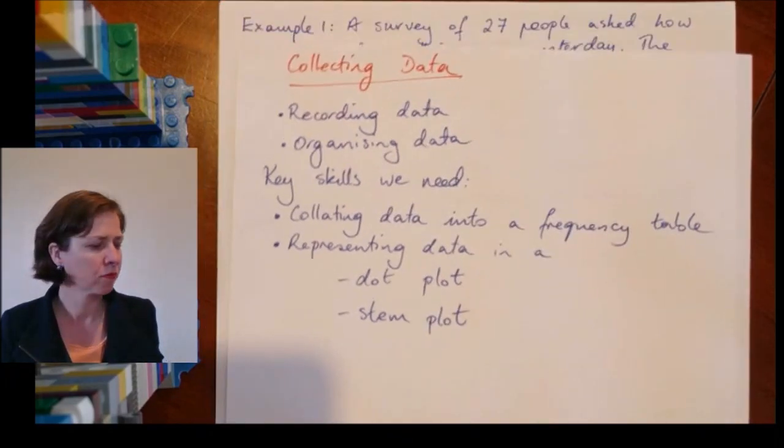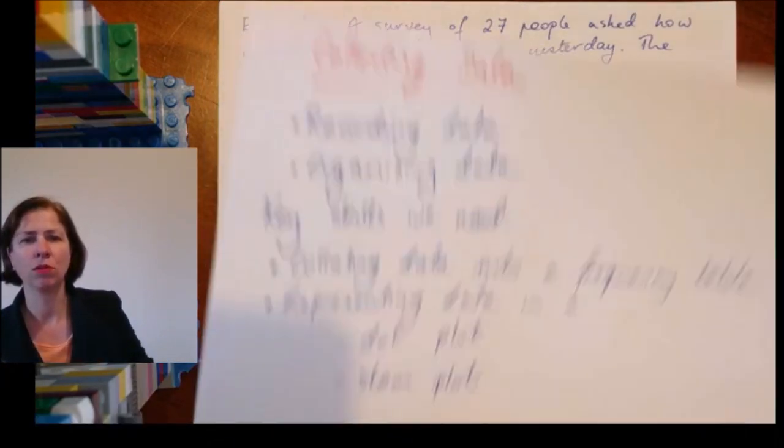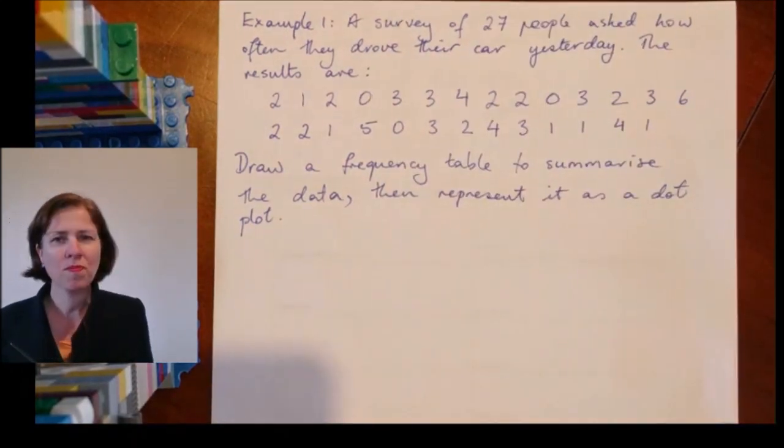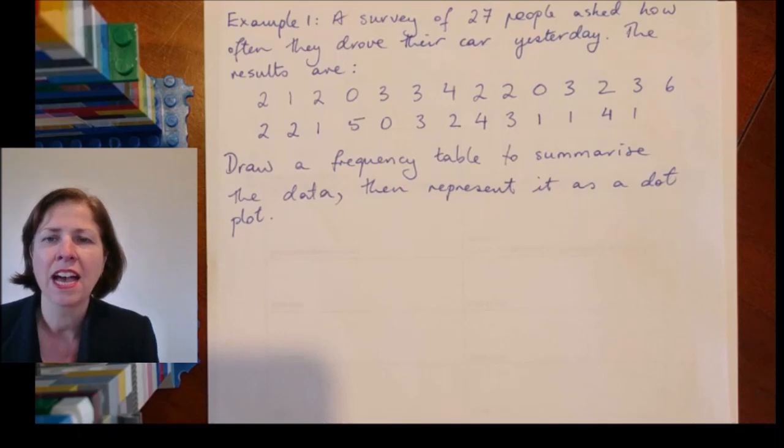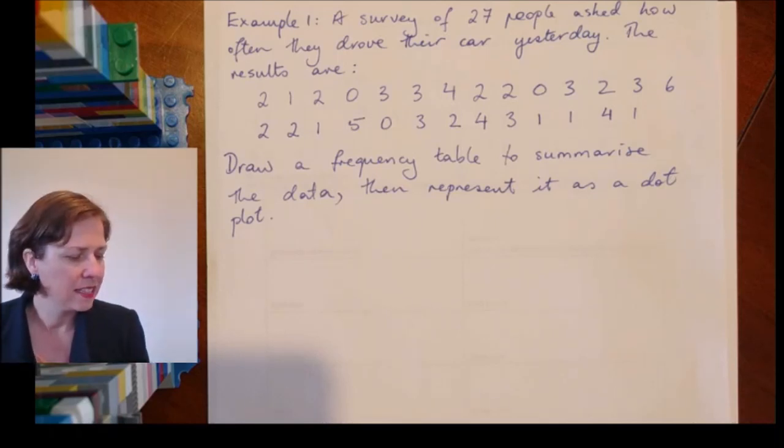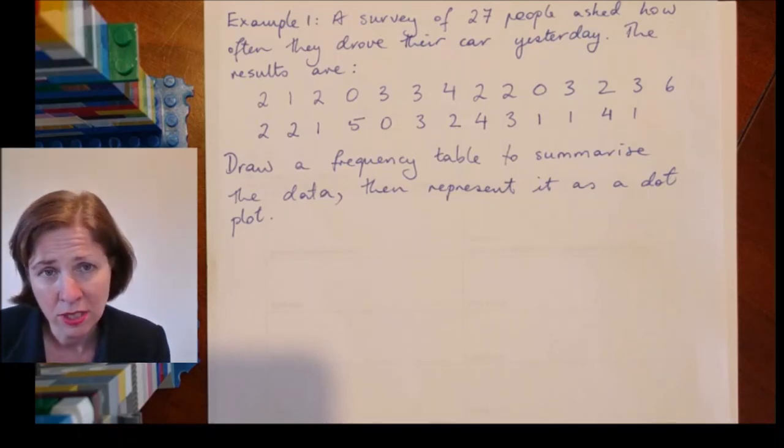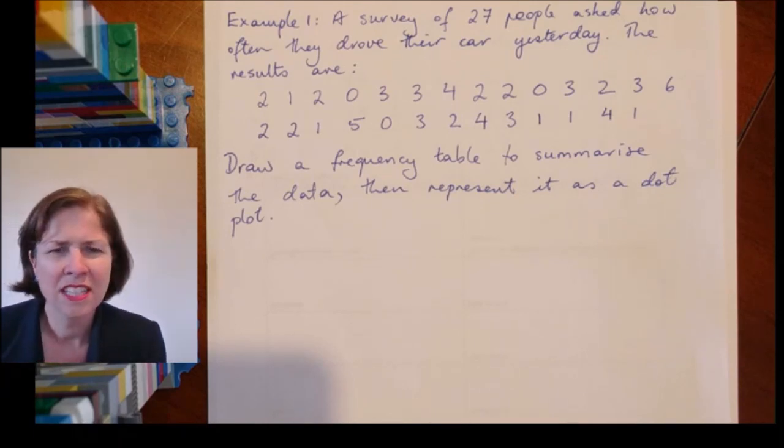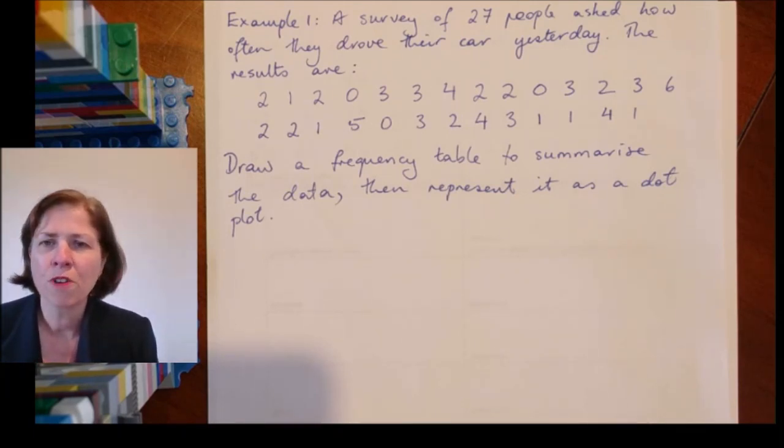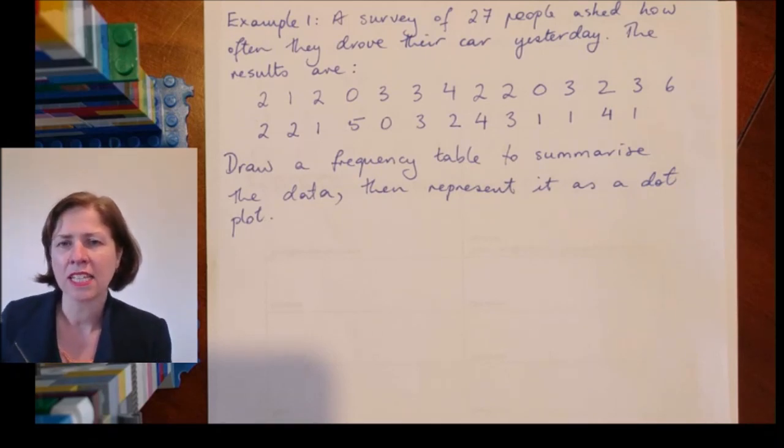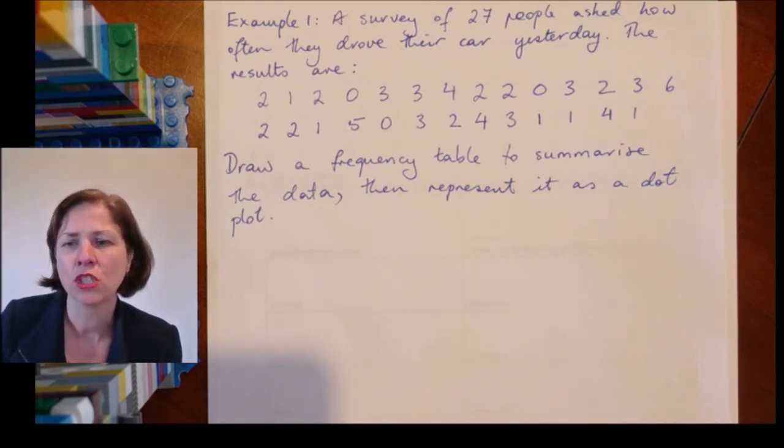Let's start with an example. I have a survey of 27 people who were asked how often they drove their car yesterday, and these are the results. You can see people use their cars quite a lot. We need to draw a frequency table to summarize the data and then represent it as a dot plot.